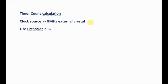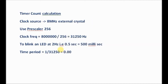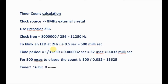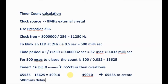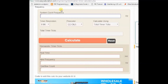The clock source is 8 MHz and we use a prescaler of 256, so now the clock frequency becomes 8,000,000 divided by 256, which is 31250 Hz. Let us blink the LED at 0.5 seconds, that is 500 milliseconds. The time period is 1 divided by 31250, which is 0.032 milliseconds. For 500 milliseconds to elapse, the counter count is 500 divided by 0.032, that is 15625. As Timer 1 is a 16-bit register it counts from 0 to 65535 and then overflows, so we subtract 15625 from 65535, giving the value 49910. If you load TCNT1 as 49910, it will count up to 65535 to create a delay of 500 milliseconds. This calculation can be done online also.